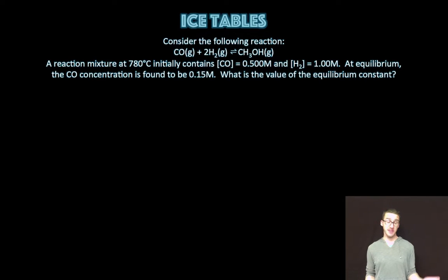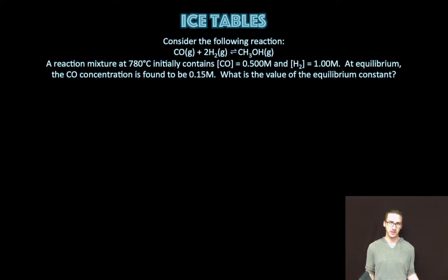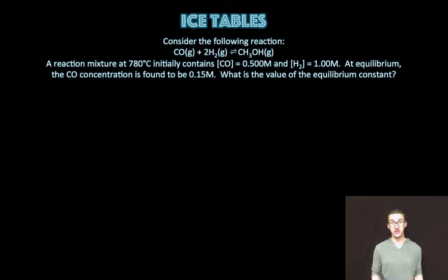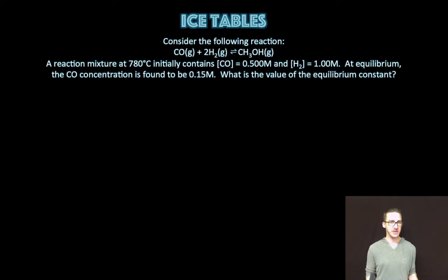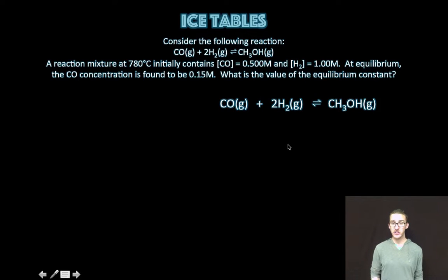Let's take a look at an example to better understand how ICE tables are going to be used. Consider the following reaction. A reaction mixture at 780 degrees Celsius initially contains 0.500 molar carbon monoxide and 1.00 molar hydrogen. At equilibrium, the carbon monoxide concentration is found to be 0.15 molar. What is the value of the equilibrium constant? Write your equation, set up your ICE table.